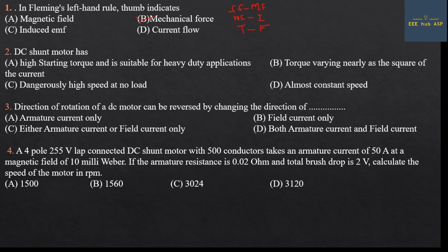Second question: The DC shunt motor has — (A) high starting torque suitable for heavy duty, (B) torque varying as the square of current, (C) dangerously high speed at no load, or (D) almost constant speed. DC shunt motor characteristic: constant speed. Answer: Option D.